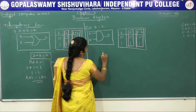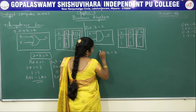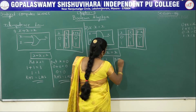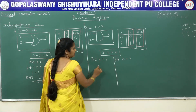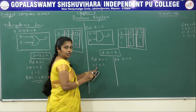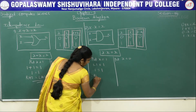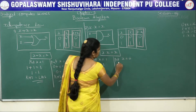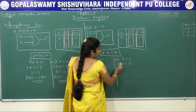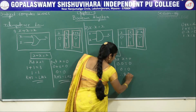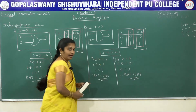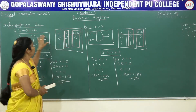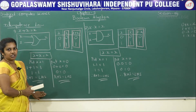Solving x into x equals x by perfect induction method: put x equals 1 — then 1 into 1 equals 1, so right-hand side equals left-hand side. Put x equals 0 — then 0 into 0 equals 0, so right-hand side equals left-hand side. In the exam, for a 5-mark question to prove idempotence law, write both postulates with the circuit diagram, truth table, and perfect induction method solution.